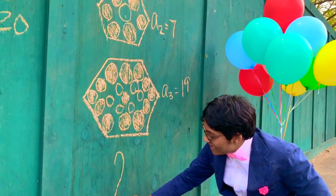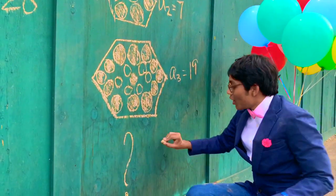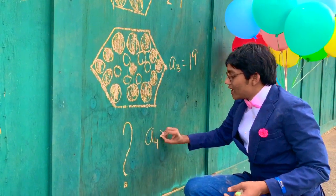Now the question is, what is the next term in the sequence? In other words, what is a sub 4 equal to?